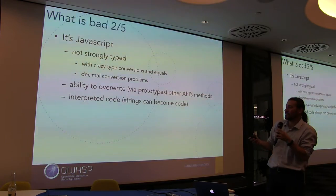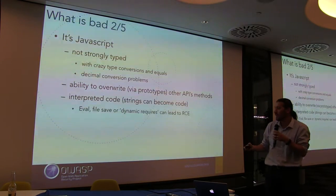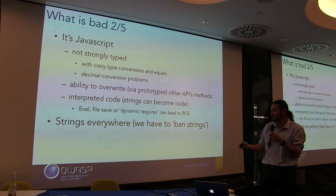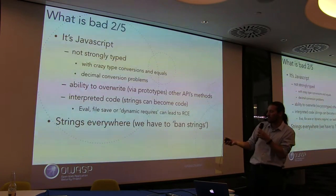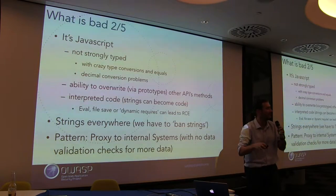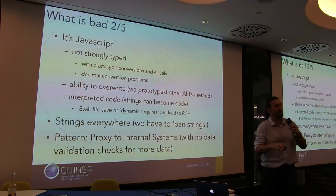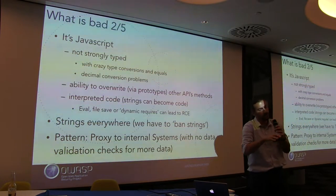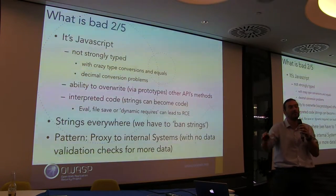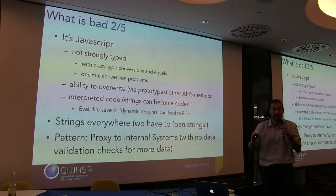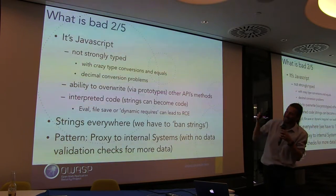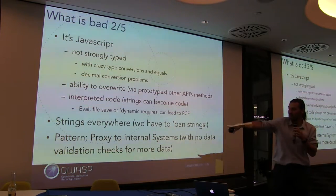It's interpreted code, so strings can become code. Eval and similar patterns can lead to code execution. There are strings everywhere, and we need to ban strings — there's no place in your code for a string. There's no place in your code for a 4-gigabyte monster of just about everything that Unicode can handle. There's actually a great post by John Bylander on that.